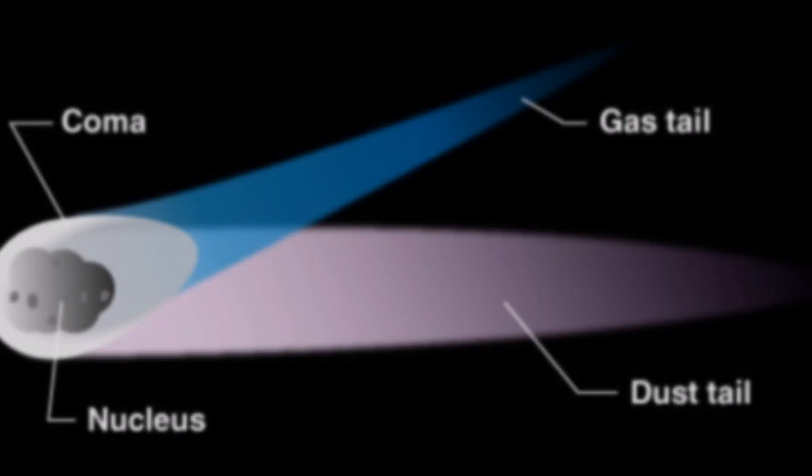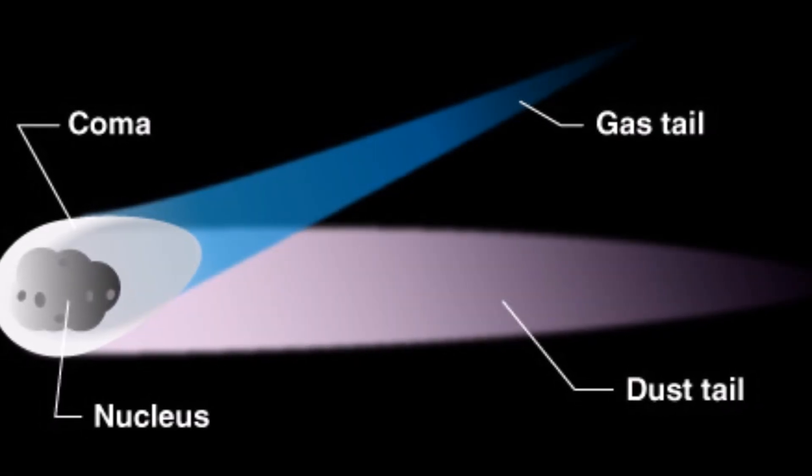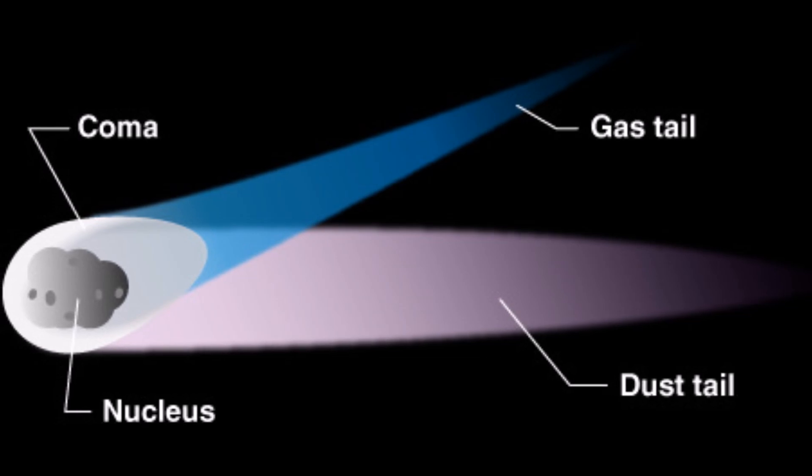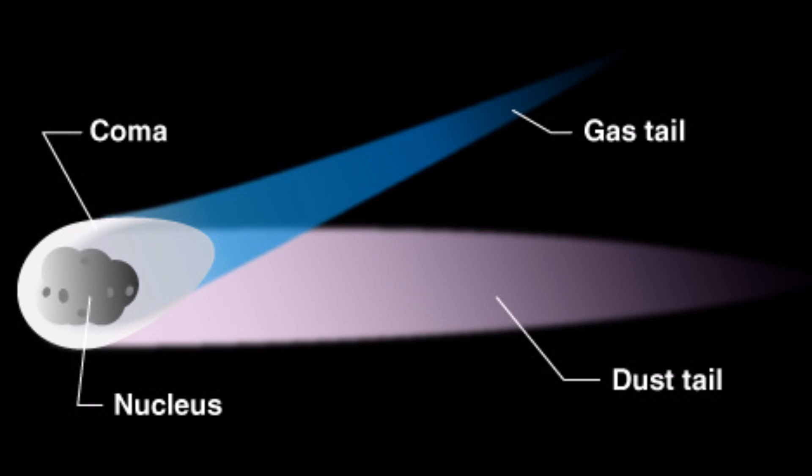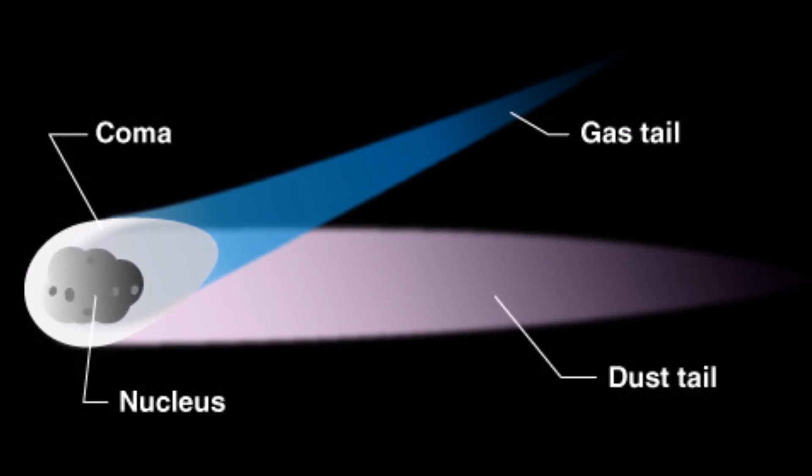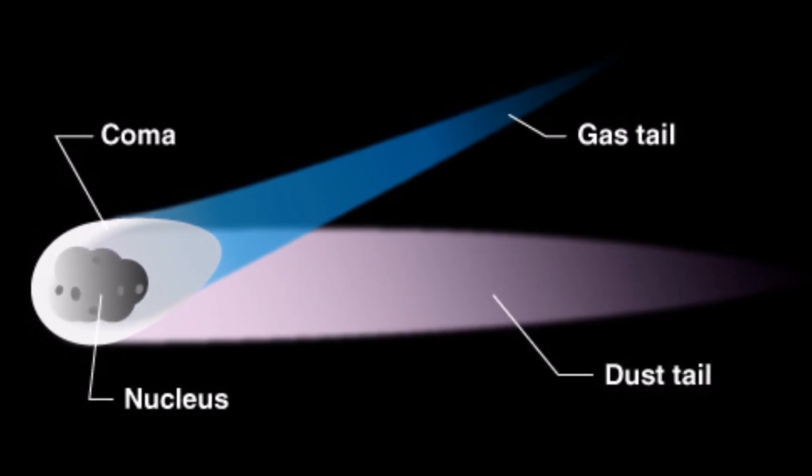There are three main parts of a comet. The nucleus, or solid central structure made of rock, dust, and ice. The coma, or dust and gas forming a thin atmosphere around the nucleus. And the tails.